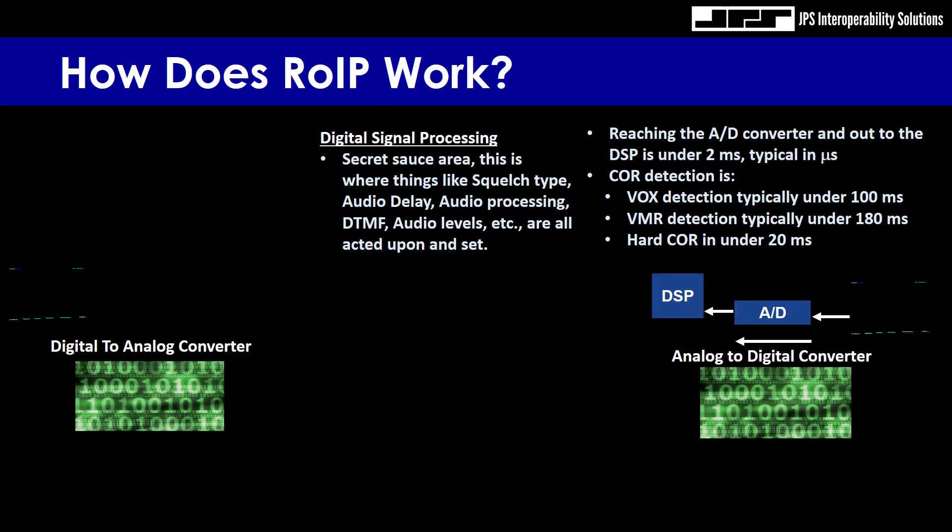Today I'd like to talk about how ROIP works. In the lower right-hand corner, you see a blue box that says A-D — that stands for Analog to Digital Converter. In JPS products that deal with ROIP, they have an audio input that can be duplex or simplex. We're going to talk about simplex here. Audio coming in to the A-D converter converts the analog voice to data — ones and zeros.